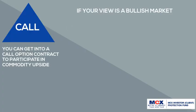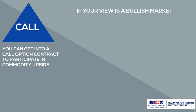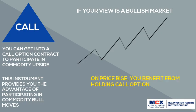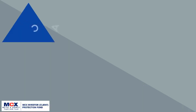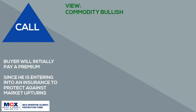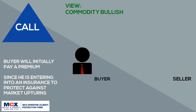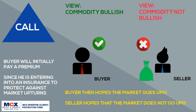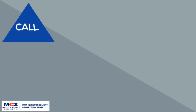If your view is a bullish market, you can buy a call option to participate in the commodity upside. A call option provides the advantage of participating in a bull market when the underlying commodity price is expected to go up. The buyer initially pays a premium to protect against market upturns with no obligation. The buyer hopes the market goes up — he is bullish. The seller hopes the market does not go up — he is bearish. Call options are popular because they provide unlimited profit if the underlying commodity goes up, while the loss is limited to the premium paid.